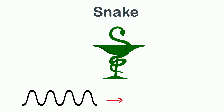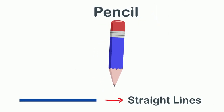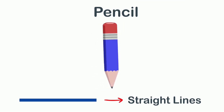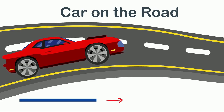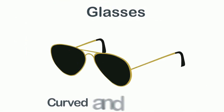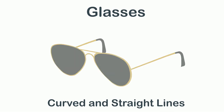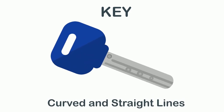This pencil is made of straight lines. Which other object makes a straight line? Yes, this car on the road — it is going in a straight line. These glasses consist of both curved and straight lines. And what about this key? Yes, it also has both curved and straight lines.